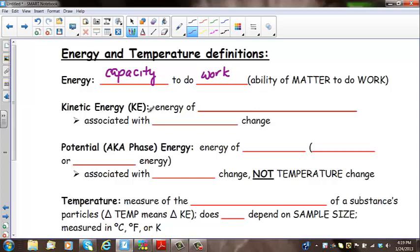Kinetic energy and potential energy might be terms that you've heard of in earth science or maybe 8th grade science. Kinetic energy is the energy of motion or movement, and it's associated with temperature change.